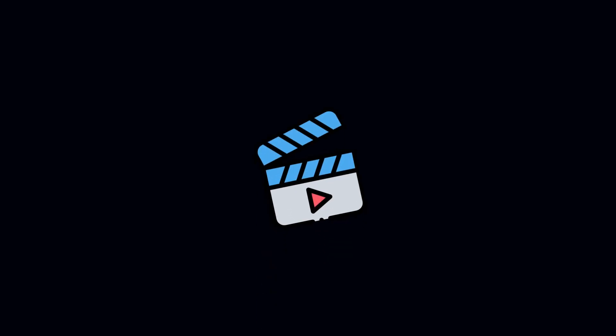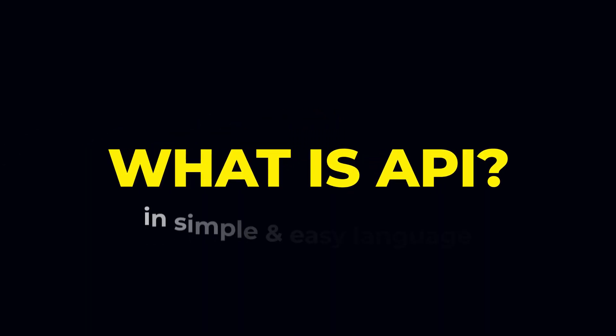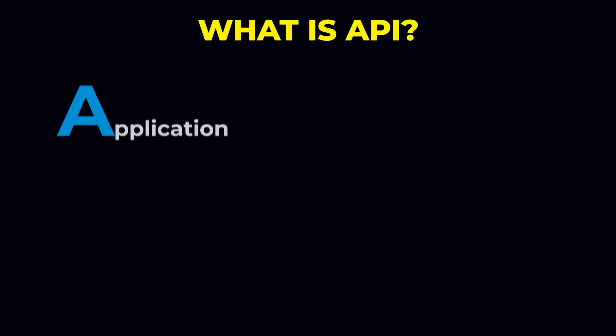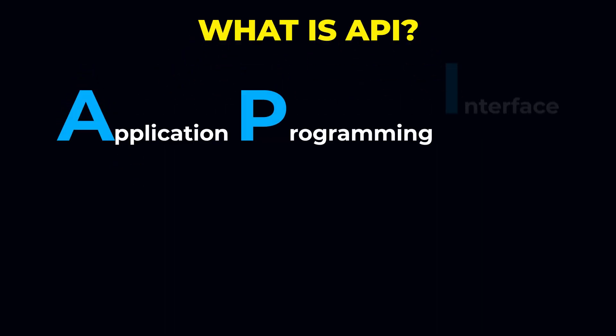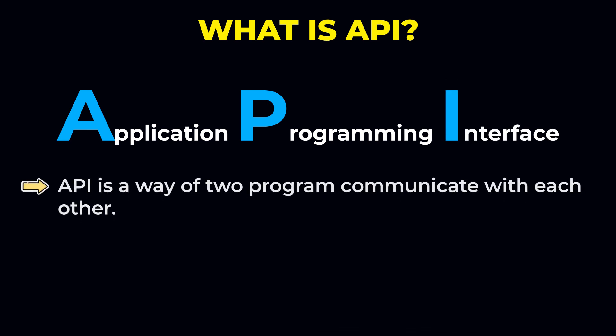In this mini tutorial, we are going to learn what is API in a simple and easy to understand manner. API stands for Application Programming Interface and it is a way for two programs to communicate with each other.